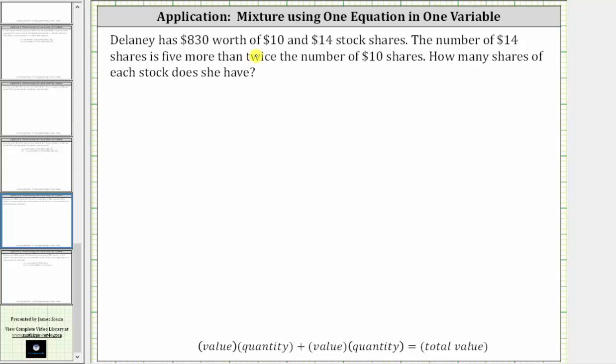Delaney has $830 worth of $10 and $14 stock shares. The number of $14 shares is five more than twice the number of $10 shares. How many shares of each stock does she have?